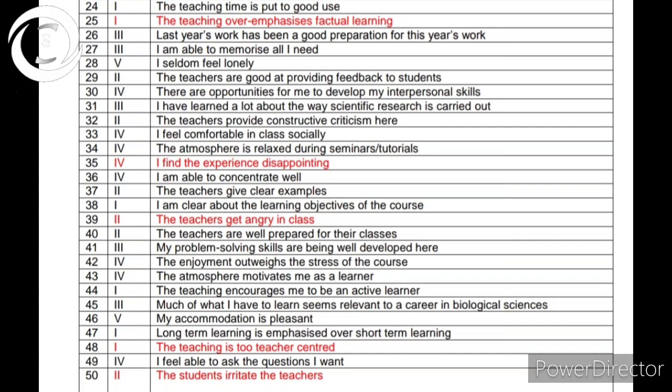DREEM has 50 items covering the five topics mentioned above. Students are provided these pro formas and asked to read all the statements carefully and answer using a five-point Likert scale.